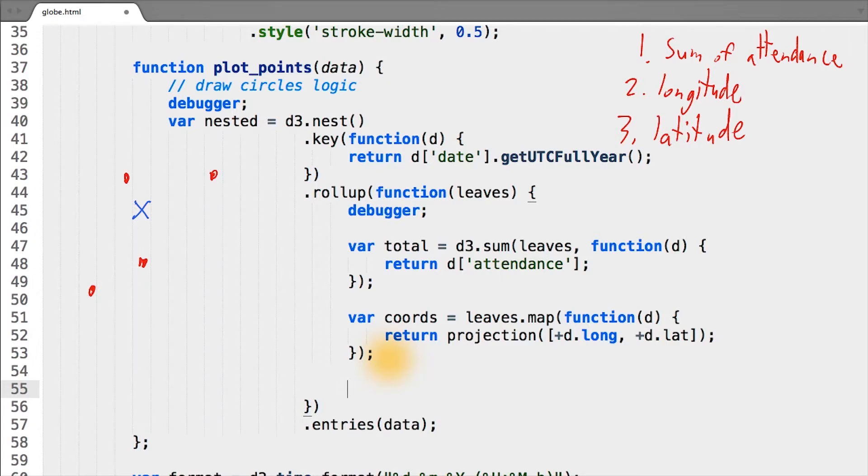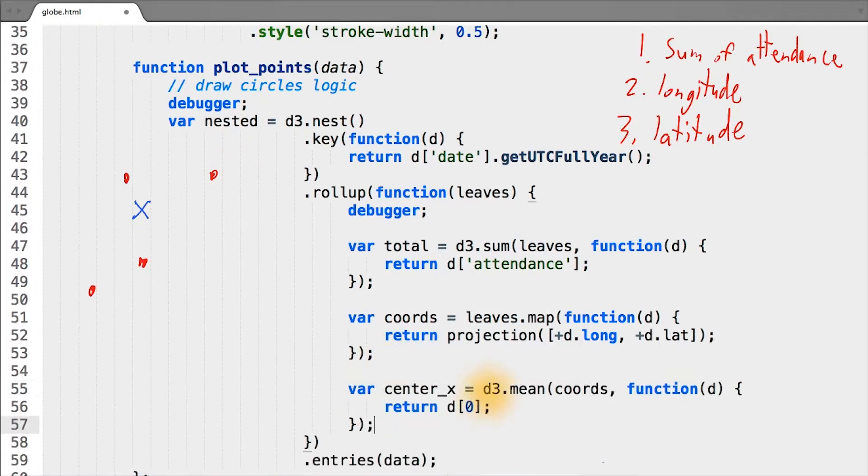Since we have all the coordinates of the games in an array, we can now use d3's mean function to compute the average. The d3 mean function, just like everything else we've been seeing, follows the exact same pattern where we pass it some array and some callback function, which defines the operation we want to perform.